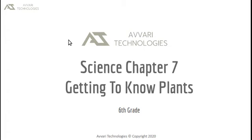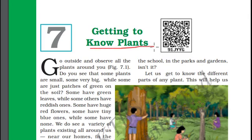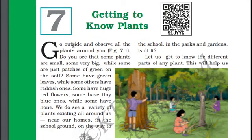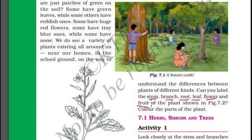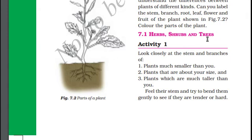Hello students, welcome to this series of science lessons. In this presentation we will study about plants — getting to know plants. When you've been into a garden, just look around. You see so many plants. Some plants are big, some are small, some have huge flowers, some have tiny flowers, while some have no flowers. We see a variety of plants around us. Generally, a plant has stem, branch, root, leaf, flower and fruit.